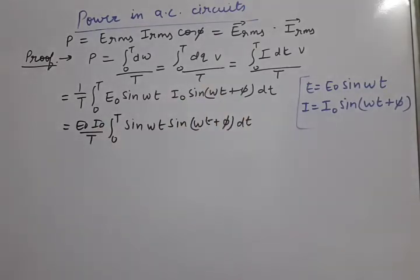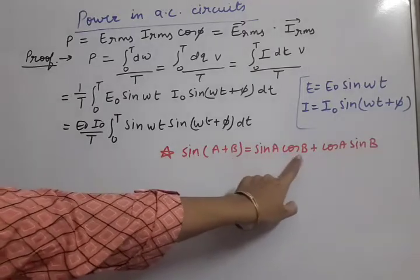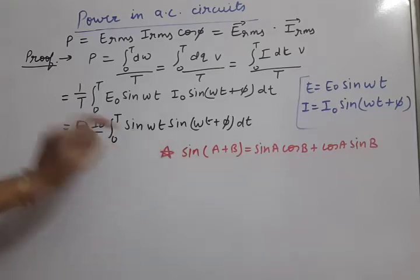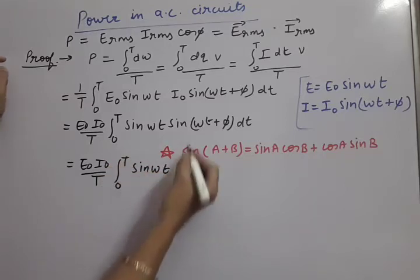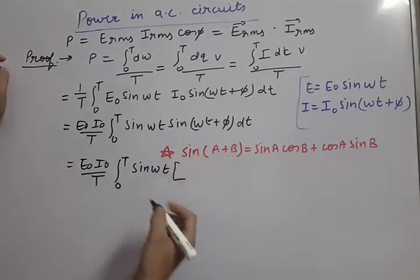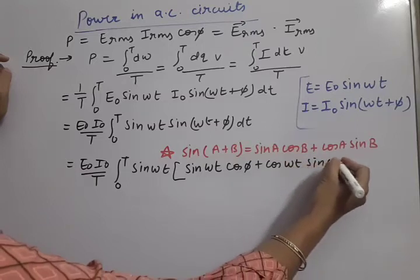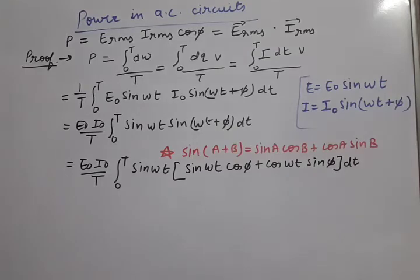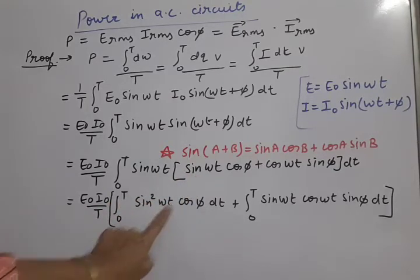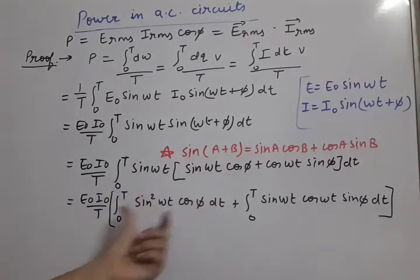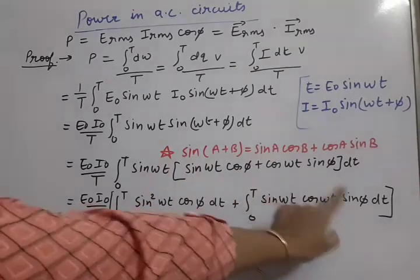We need to apply a mathematical technique to solve this integration. sin(ωt + φ) is expanded using the formula: sin(A + B) = sin A cos B + cos A sin B. Applying this, it becomes (E₀I₀/T) × integral from 0 to T of sin(ωt) × [sin(ωt) cos φ + cos(ωt) sin φ] dt. Multiplying through, sin(ωt)·sin(ωt) gives sin²(ωt)·cos φ, and the second part is sin(ωt)·cos(ωt)·sin φ dt.